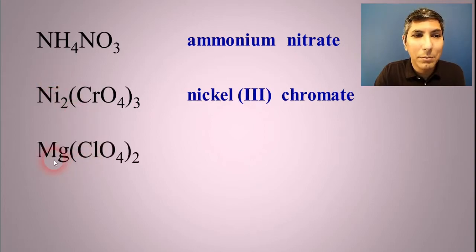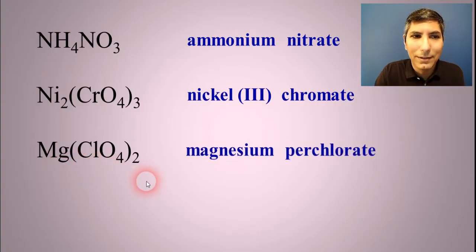On this one here, Mg, of course, is magnesium. And ClO4 is perchlorate. Magnesium is not a transition metal. Magnesium doesn't need any Roman numeral. It's just magnesium perchlorate.